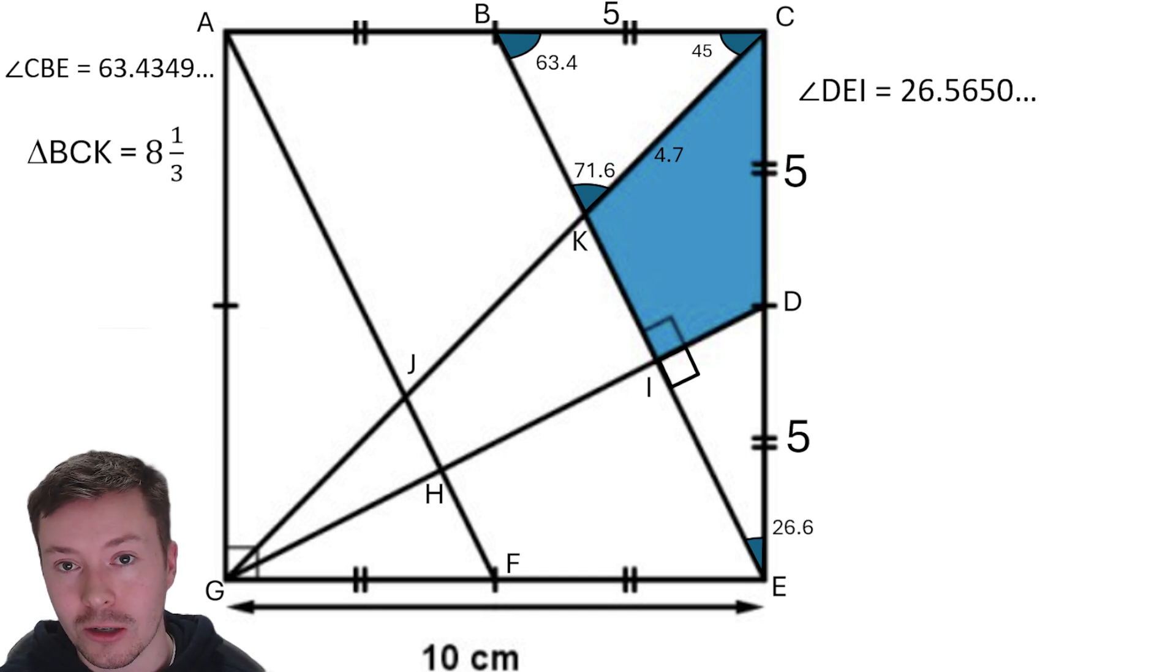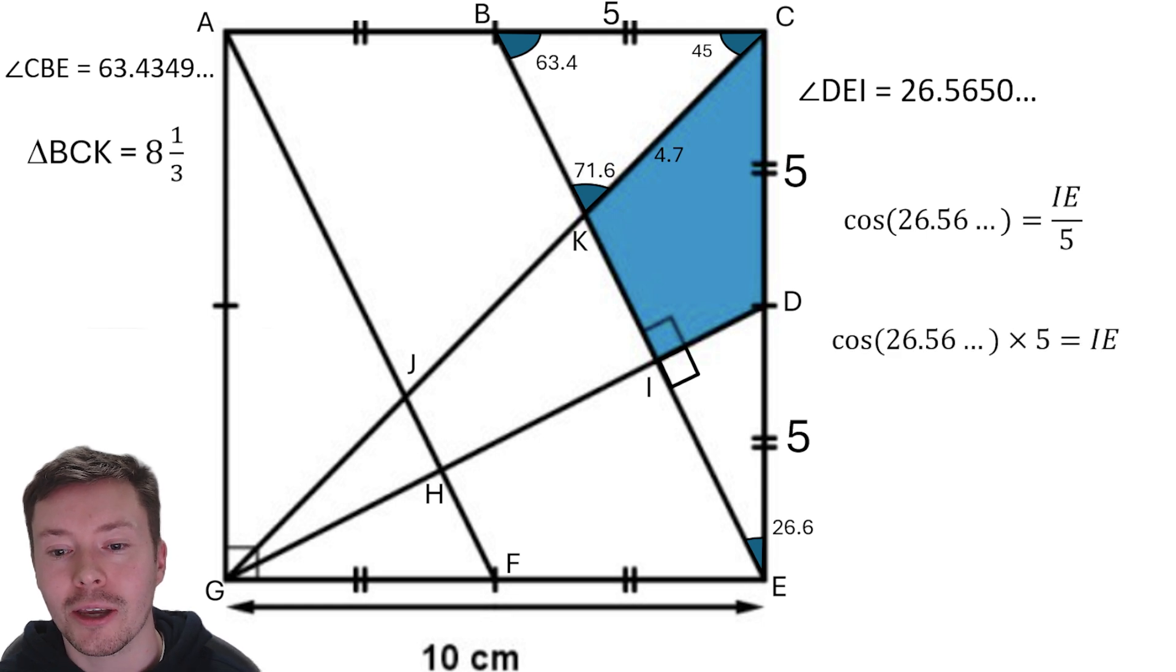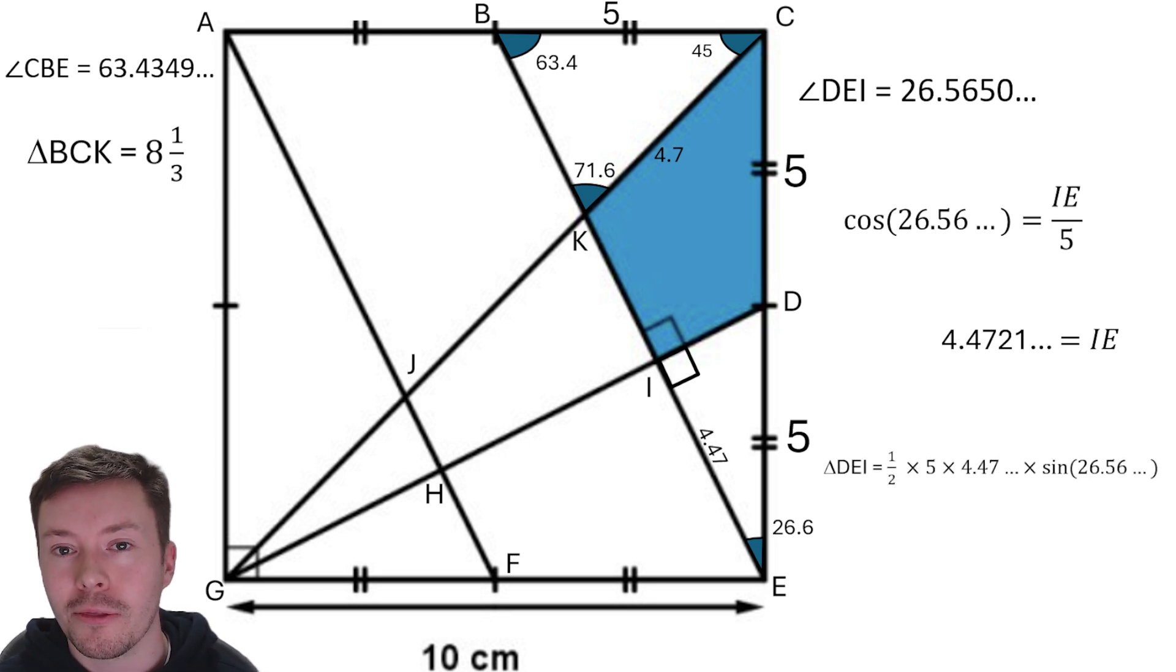What I can now do is use right angle trigonometry. So using 26.5650, I have got a side length of 5, that's the hypotenuse, and I want to work out the adjacent. So that's I to E. Adjacent and hypotenuse is cos. So I get cos of the angle is adjacent, IE over 5, which is the hypotenuse. Multiply both sides by 5, and I get cos 26.56 times 5 is equal to the length that I want, which is 4.4721. Putting that on my diagram, I then want to use half A, B, sine C again to work out the area of that triangle, and that's going to be half times 5 times 4.47 times sine 26.56. That gives an answer of 5, which is another exact value, which will definitely make my answer now a bit nicer. It's going to make it an exact value, which is good.